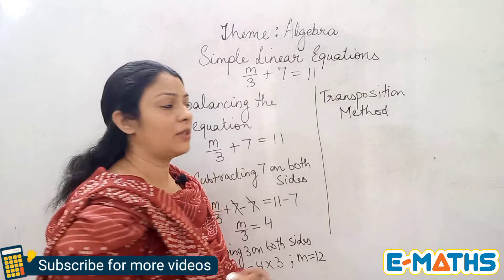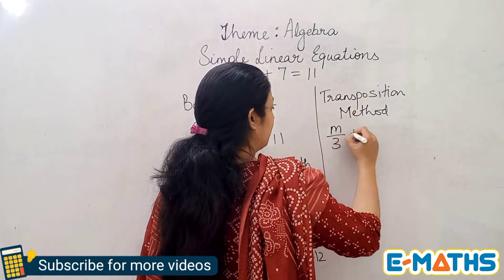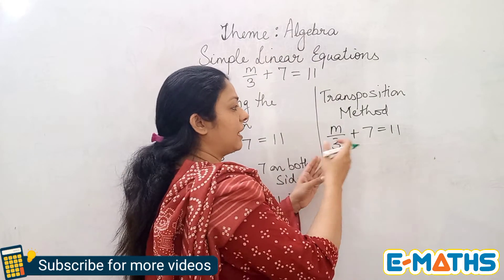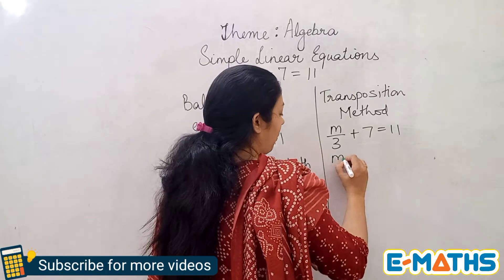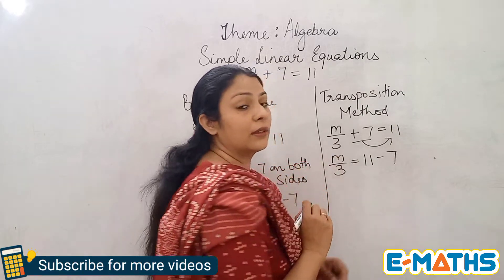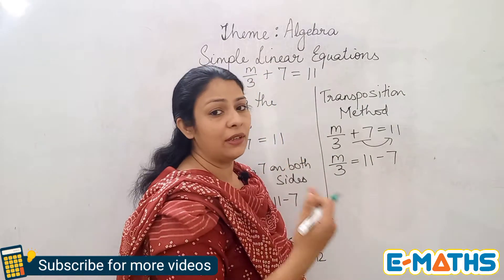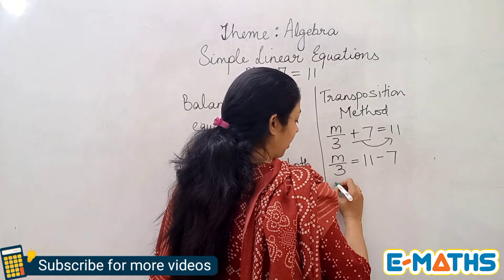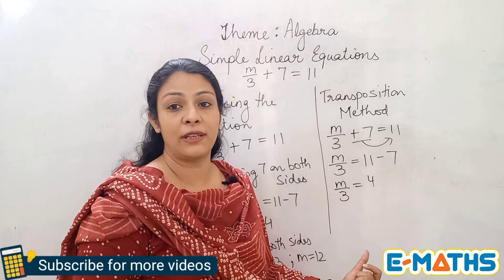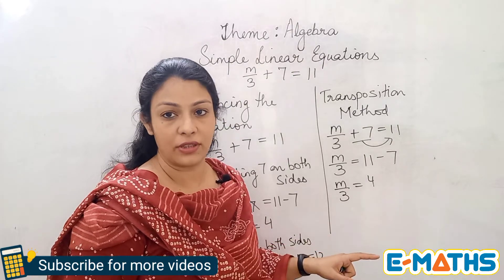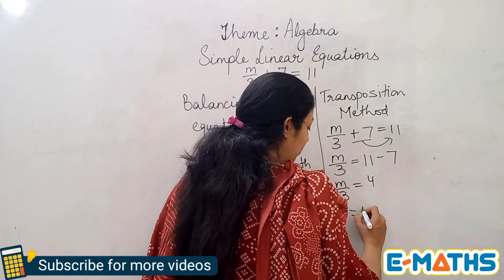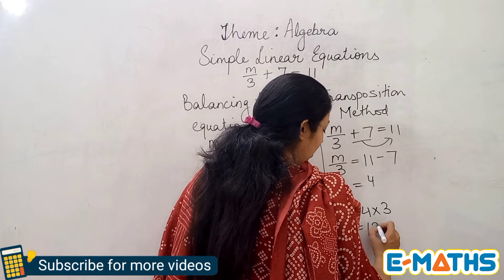Now the same question m upon 3 plus 7 equals 11 by transposition. I transpose one term at a time — I cannot move 3 and 7 together. First, I transpose 7 to the right hand side, changing its sign to minus 7, giving m upon 3 equals 4. Then I transpose the 3: since it is in division, when it moves to the right hand side, it becomes multiplication, so m equals 4 times 3, which is 12.